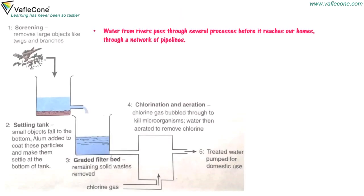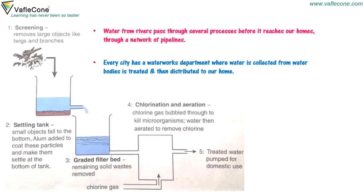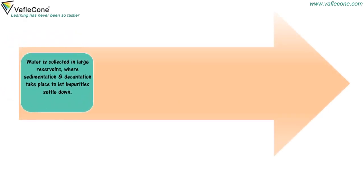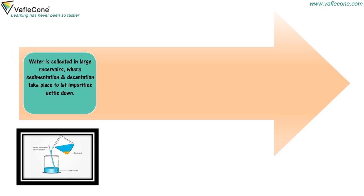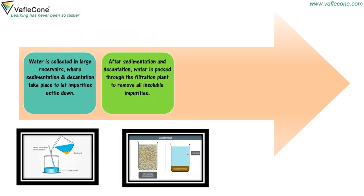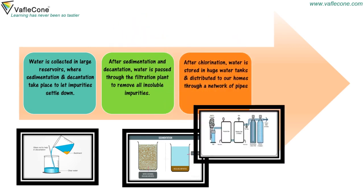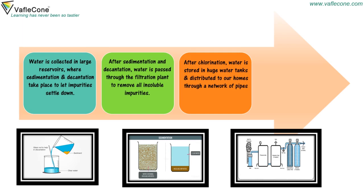Water supply: Water from rivers passes through several processes before it reaches our homes through a network of pipelines. Every city has a water network department where water is collected from water bodies, treated, and then distributed to our homes. Water is collected in large reservoirs where sedimentation and decantation take place to let impurities settle down. After sedimentation and decantation, water is passed through a filtration plant to remove all insoluble impurities. After chlorination, water is stored in huge water tanks and distributed through a network of pipes.